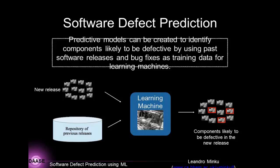Software defect prediction is concerned with identifying which components of our software are likely to be faulty. We can create predictive models using a machine learning approach. This machine learning approach can learn from repositories of previous releases of our software, plus the bug information from these previous releases, and build a predictive model. Once we have this predictive model and we get a new release, we can query it to determine which components are likely to be defective.